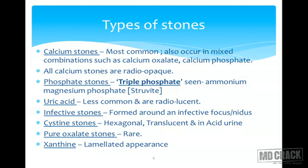The second type is phosphate stones, usually seen as ammonium magnesium phosphate, also called triple phosphate or AMP - important to remember for MCQs. These are also called 'two white stones.' They are not so common but when formed are very hard and radiopaque stones.